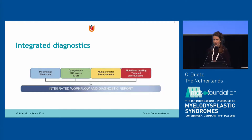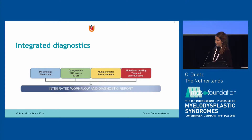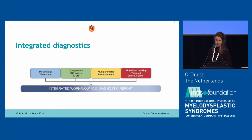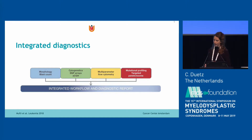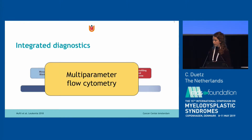Some cases of MDS are challenging to diagnose and sometimes it's difficult to exclude MDS. So we use a lot of tools to have the highest possible accuracy. We use morphology, cytogenetics, mutational profiling, but we also use flow cytometry, which is a recommended tool in the diagnostic workup of myelodysplastic syndromes.